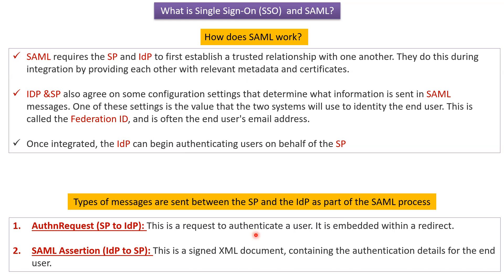As part of the SAML process, there are two types of messages sent between the SP and the IDP. The first one is the authentication request, which is sent from the SP to the IDP — this is the request to authenticate the user, and it is embedded within a redirect. The second one is the SAML assertion, which is sent from the IDP to the SP, and is a signed XML document containing the authentication details of the end user.